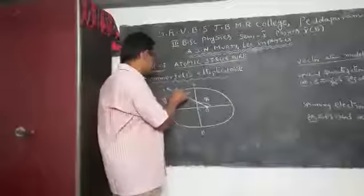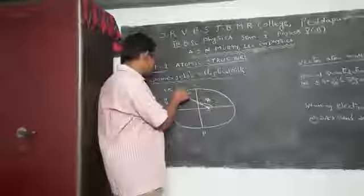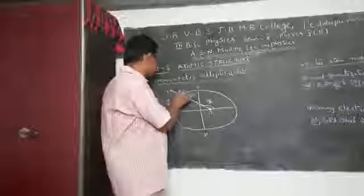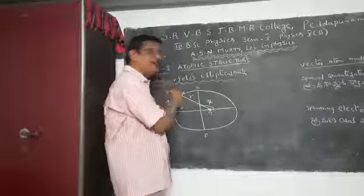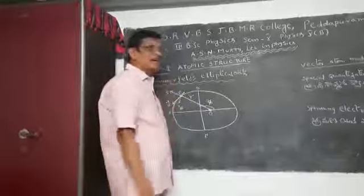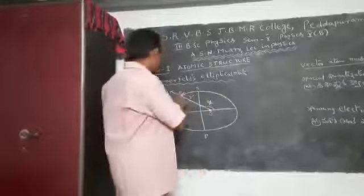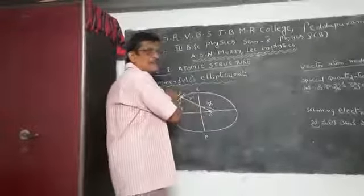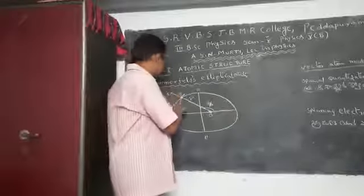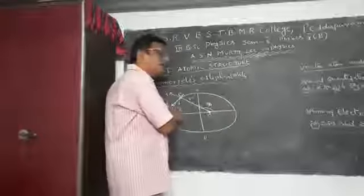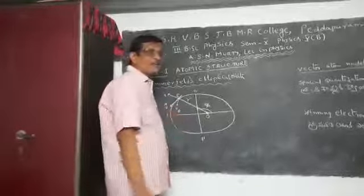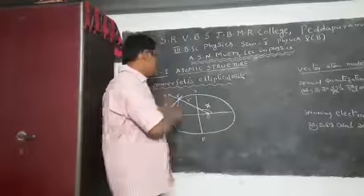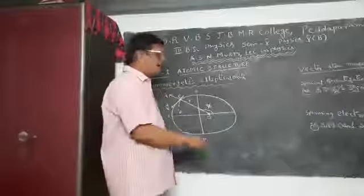At any particular point, velocity is along the tangent. The velocity along the ellipse is along the tangent drawn at that point. It has got two perpendicular components: one is the radial component of velocity, and the second one is the azimuthal component of velocity. That is why two degrees of freedom and two coordinates are there.